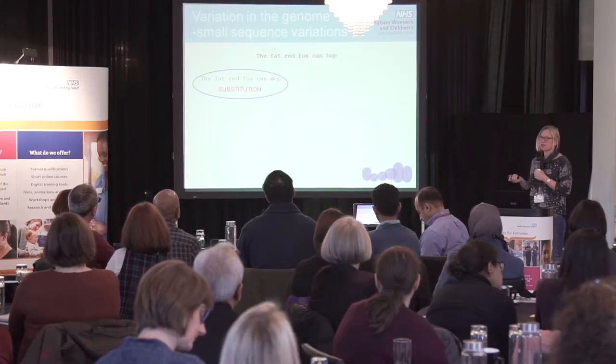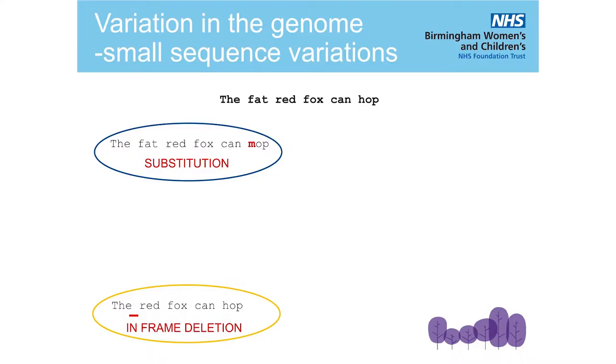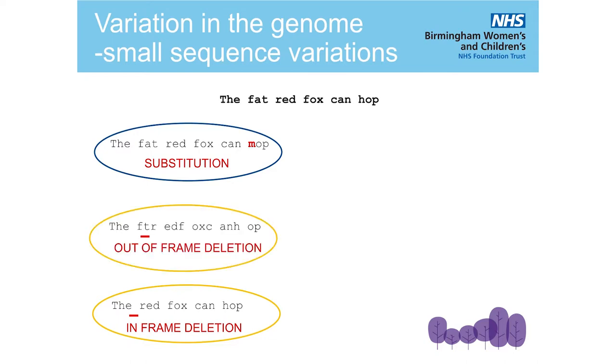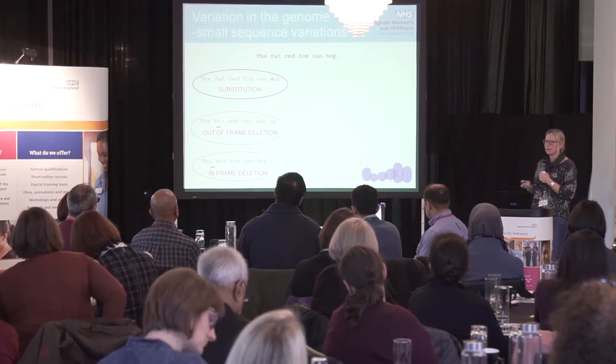The types of small changes we're looking for are best illustrated by an analogy to a sentence: 'the fat red fox can hop.' A substitution is like a spelling mistake — you can still read the sentence, but its meaning changes slightly, and there may or may not be a phenotypic effect. A deletion of three letters can leave the sentence readable — an in-frame deletion. But deleting just one letter throws the reading frame out and the sentence becomes gibberish. This illustrates how just one single missing letter can have such a dramatic effect.